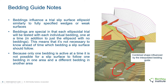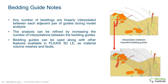This allows for parts of the sliding mass to be ellipsoidal shaped, while other parts follow the bedding shape. Any number of beddings are linearly interpolated between each adjacent pair of guides during the model analysis. In this case, we have the purple lines set in the model, and we have defined 10 interpolated surfaces between the adjacent pairs, so between the two pairs there will be 10 additional surfaces added. The analysis can be refined by increasing the number of interpolations between the bedding guides.